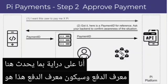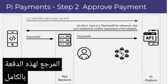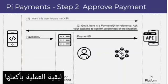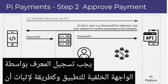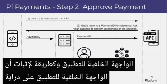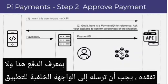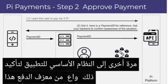That payment ID will be the reference to this payment for the entire process. The payment ID has to be recorded by the app back end, and as a way to prove that the app back end is aware of this payment ID and hasn't lost it, the app's back end has to send it again to the Pi platform to confirm that it's aware of this payment ID.